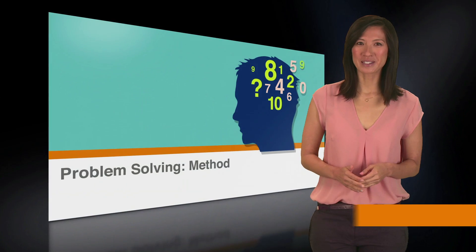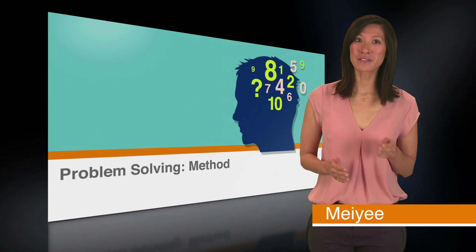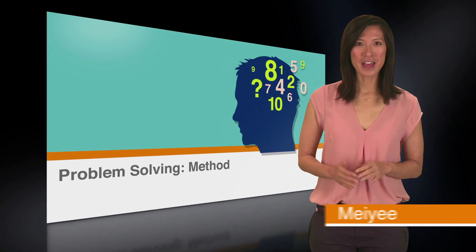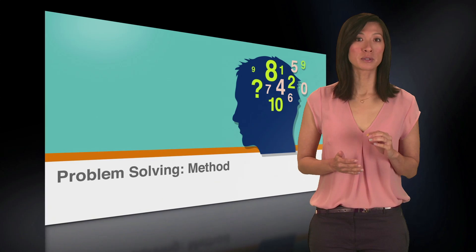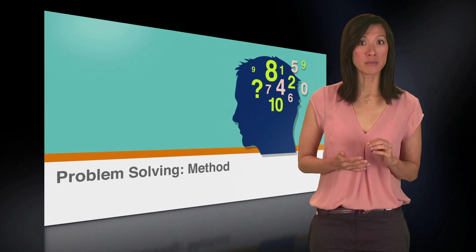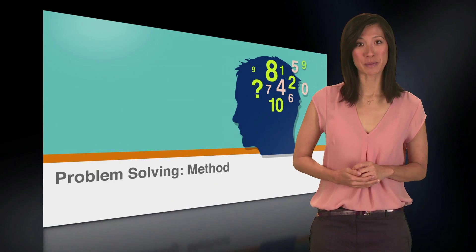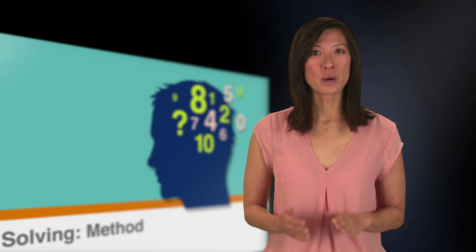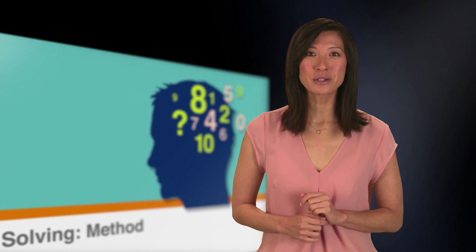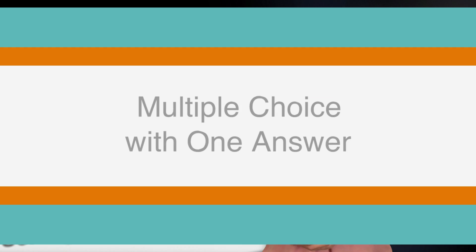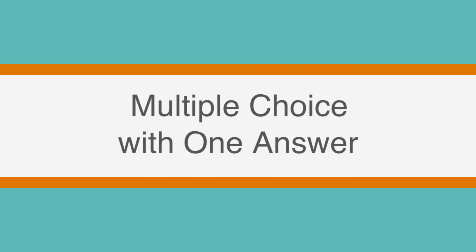After the quantitative comparisons at the beginning of each quantitative reasoning section, there is a mix of multiple choice with one answer, multiple choice with one or more answers, and numeric entry problems. In this lesson, we'll explain what each question type is and also go through a single problem solving method that is very effective to use with all of them. Let's take a look at multiple choice with one answer.